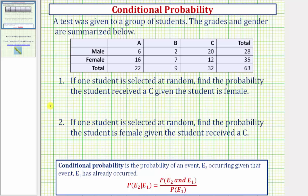So again, for number one, we want to find the probability that the student received a C given we know the student is female. And for number two, we want to find the probability that the student is female given we know the student received a C.